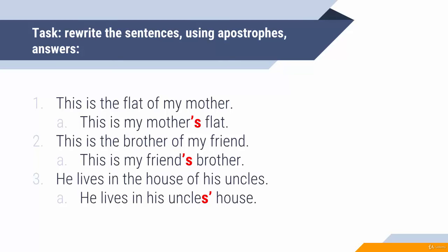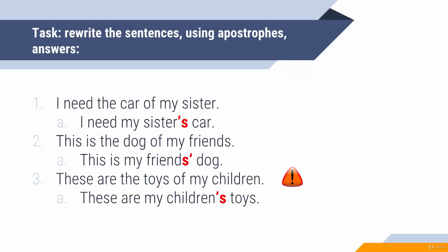'He lives in the house of his uncles.' 'Uncles' is in plural, so be careful — 'He lives in his uncles' house.' The apostrophe is after S. 'I need the car of my sister' — 'I need my sister's car.' One sister. 'This is the dog of my friends.' 'Friends' is in plural, so the apostrophe is after S.